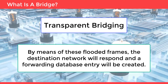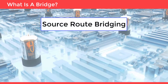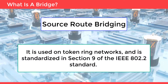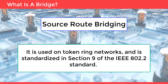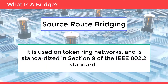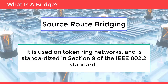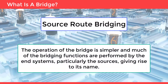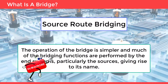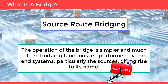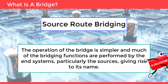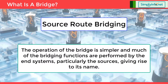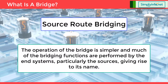Source route bridging: it is used on token ring networks and is standardized in section 9 of the IEEE 802.2 standard. The operation of the bridge is simpler and much of the bridging functions are performed by the end systems, particularly the sources, giving rise to its name.